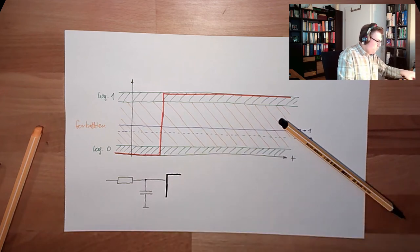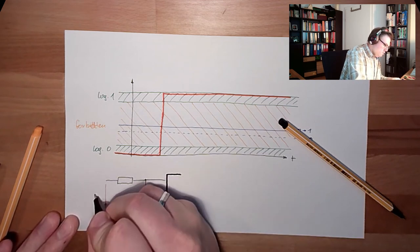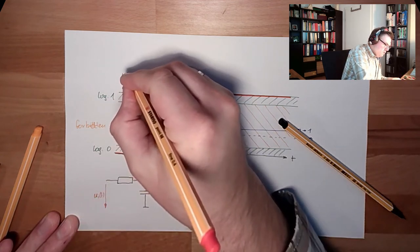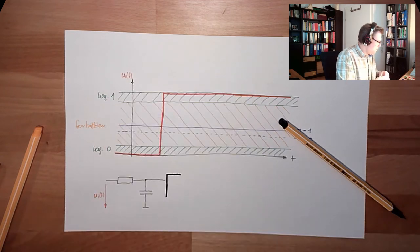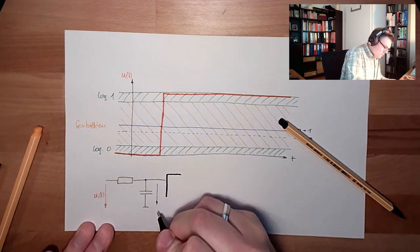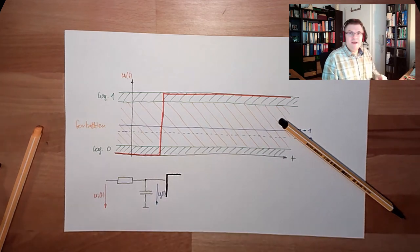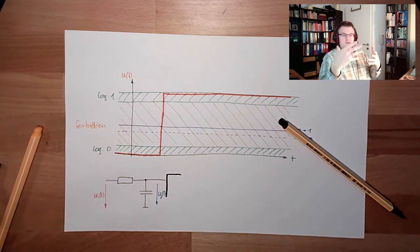Here we do have this sharp edge here. So this is the input voltage. And here we have a delay voltage. And this delay voltage will then increase slowly.